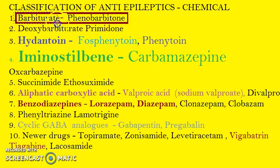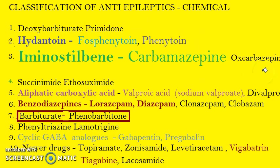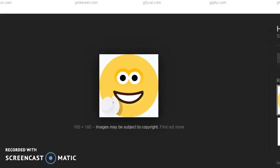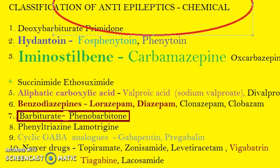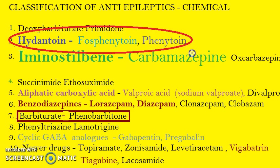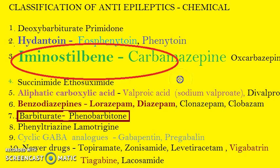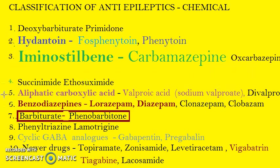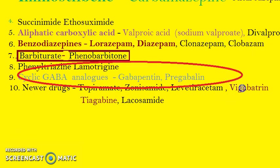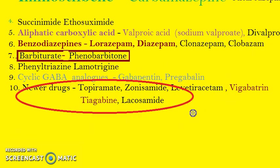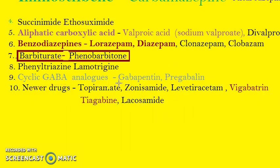Let us revise the full chemical classification. First: hydantoin — examples fosphenytoin and phenytoin. Second: iminostilbene — carbamazepine, very important. Third: aliphatic carboxylic acid — valproic acid, also called sodium valproate. Fourth: benzodiazepines — lorazepam and diazepam. Fifth: barbiturates — phenobarbitone. Sixth: cyclic GABA analogs — gabapentin and pregabalin. Seventh: newer drugs — vigabatrin, tiagabine, zonisamide, etc.